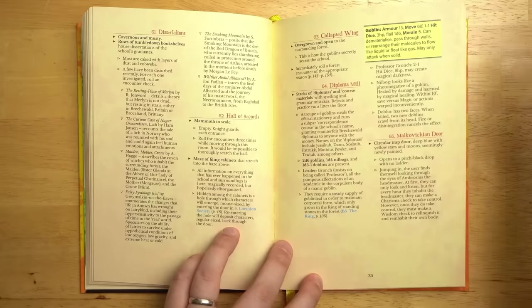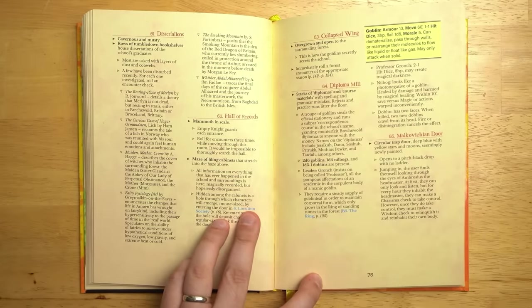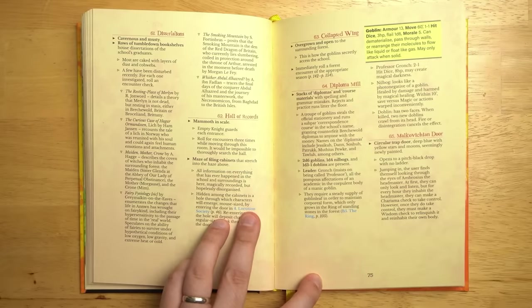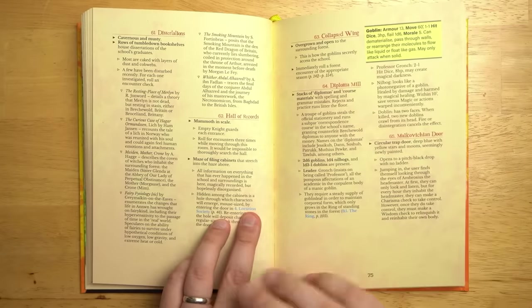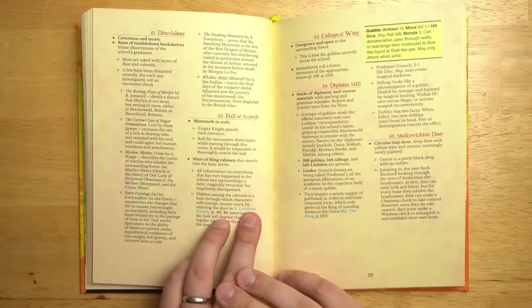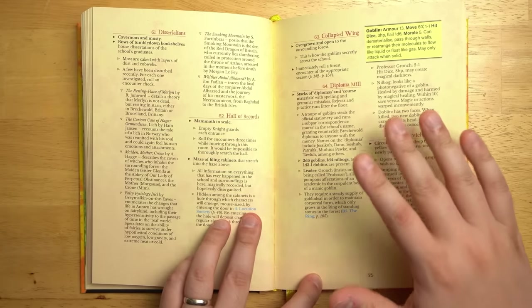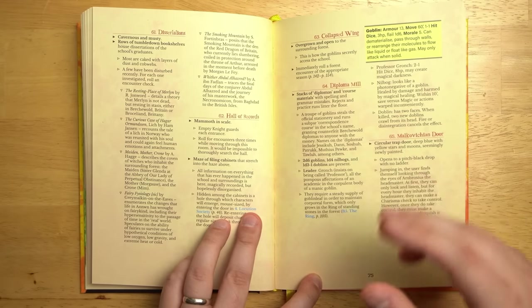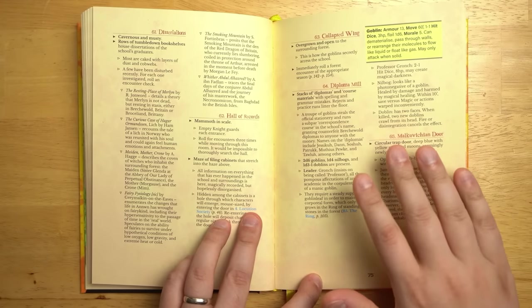One of the fun things about this book is just the strange random tables and the stuff that you can discover if you want to dig around enough. Like, if you go through the records room and start looking through dissertations, you might find things like The Smoking Mountain. It posits that The Smoking Mountain, which is a actual mountain nearby Brekiewald, you can get to it on the hex crawl, is a den of the Red Dragon of Britain who currently lies slumbering, curled in protection around the throne of Arthur, arrested in the moment before death by Morgan Le Fay. That's actually true. You can actually find Arthur if you search the mountain. So there's real concrete information right here. This book is not very coy about not giving you the information you need yet or only giving you parts of it. It's pretty explicit. When you find information, it's good information and it's going to lead to more adventure, which I think is the correct way to do things.